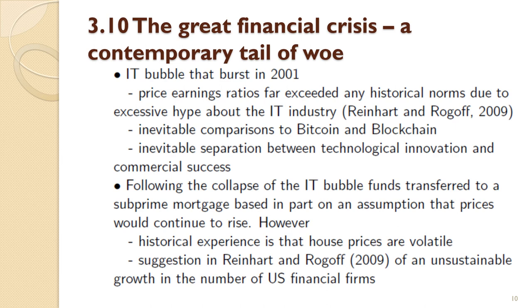The great financial crisis serves as a useful contemporary tale of woe. Reinhart and Rogoff draw attention to the burst of the IT bubble in 2001, where price-earnings ratios far exceeded any historical norms due to excessive hype about the IT industry. There are inevitable comparisons to be made between this historical bubble and Bitcoin and blockchain, and an inevitable potential separation between technological innovation and commercial success. Following the collapse of the IT bubble, funds transferred to the subprime mortgage sector based partly on an assumption that prices would continue to rise.